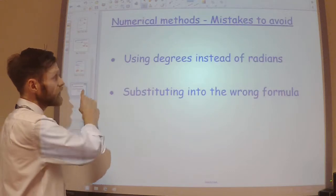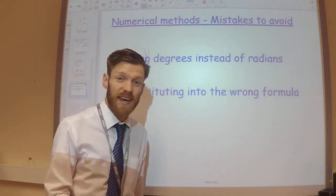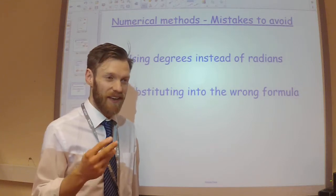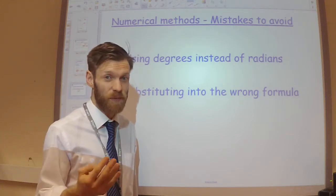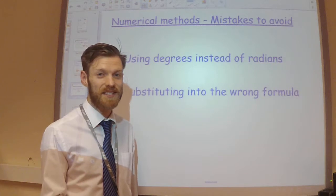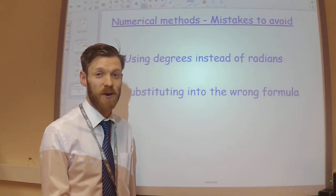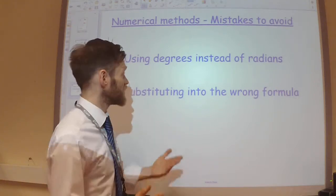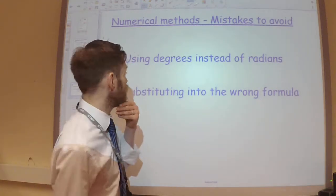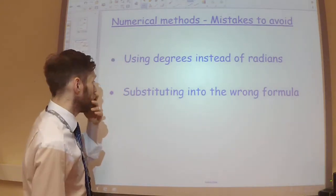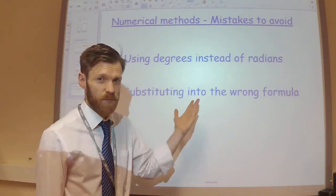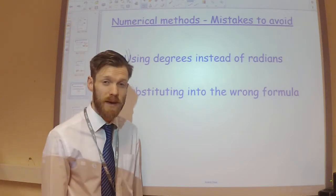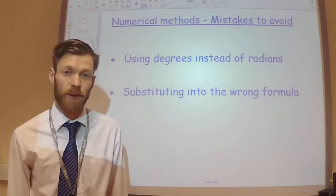Some things to avoid. Make sure you're in the correct modes in your calculator. So often I've seen students lose like three, four, maybe even five easy marks just because they're not in the correct mode in the calculator and they're just blindly substituting numbers in without thinking about it. So make sure you're in the correct mode. Yeah, I've already covered this point. Make sure you're substituting the upper band and the lower band into the correct formulas. Those are the two main mistakes to avoid in this topic.